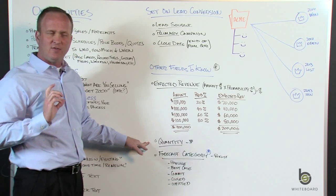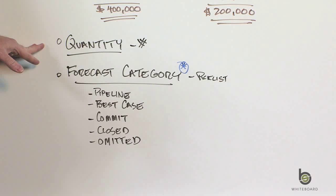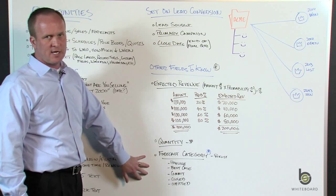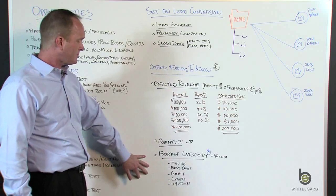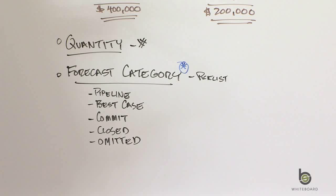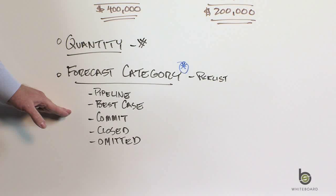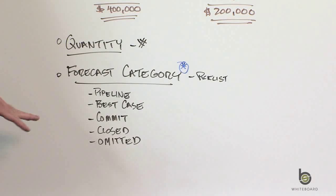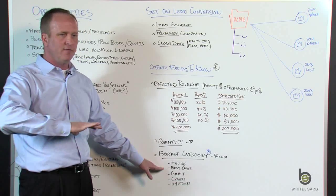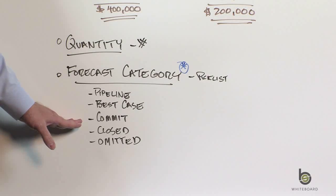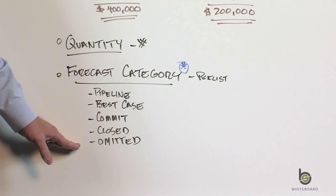Quantity is a number field, also not on the page layout by default. If you turn on products, quantity counts up the number of products on the opportunity; without products, it's just a number field for tracking units. Forecast category is similar to stage — where you are in the pipeline — but it lets you categorize which deals are going to close in a specific period, independent of stage. Options include: Pipeline (an open deal), Best Case (if all the stars align, it closes this month), Commit (you're far along and committing to your forecast), Closed (won or lost), and Omitted (don't show it on a forecast).